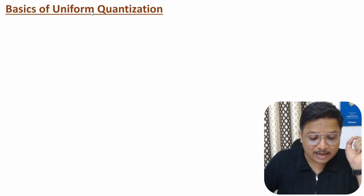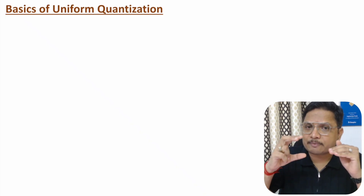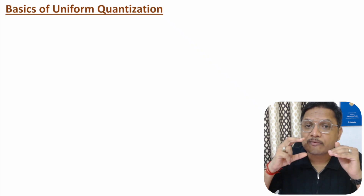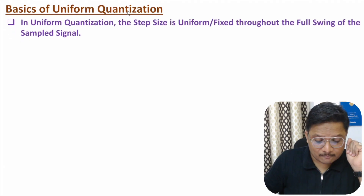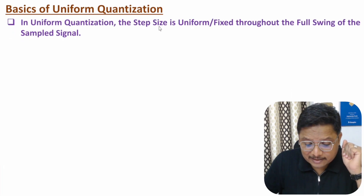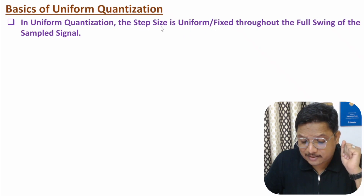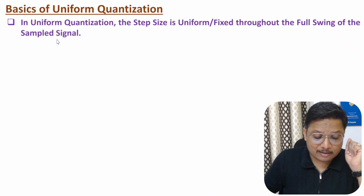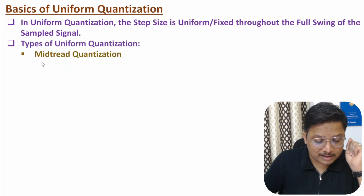In uniform quantization, step size will be uniform — one can say step size is fixed throughout the full swing of the sampled signal. There are basically two categories of uniform quantization: mid-tread quantization and mid-riser quantization.